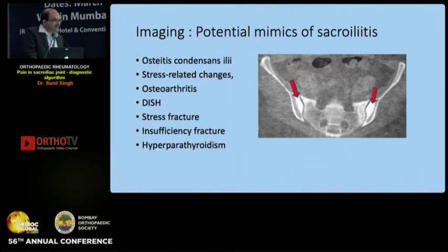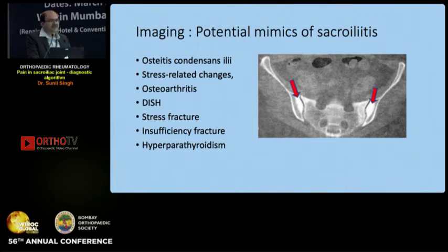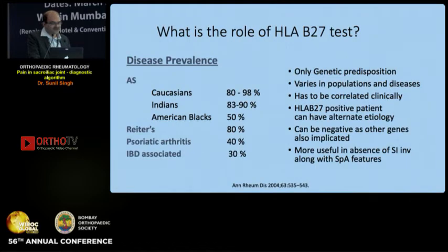On imaging, one must also be careful of potential mimics. For example, osteitis condensans ilii can look like sacroiliitis, but the joint space is normal with no erosions. This is often seen in multiparous women due to stress at the sacroiliac joint.